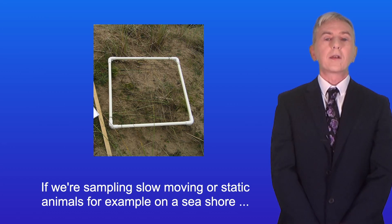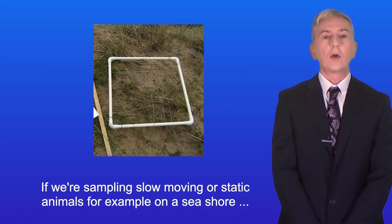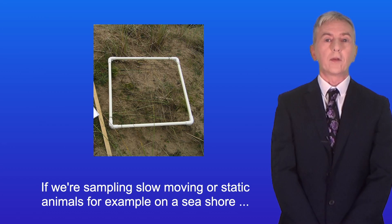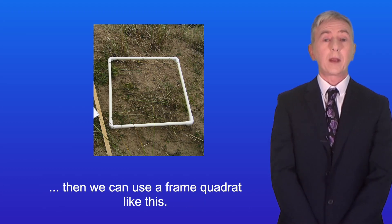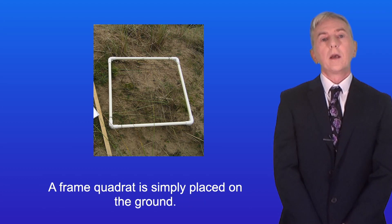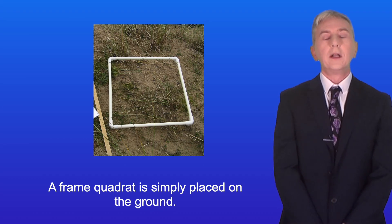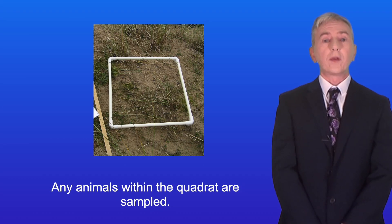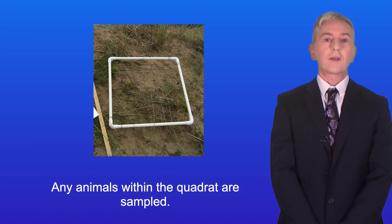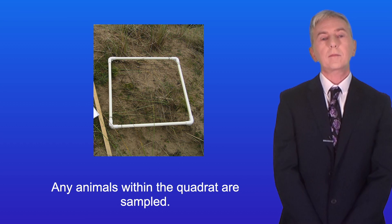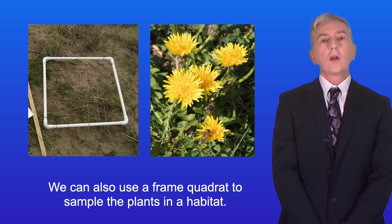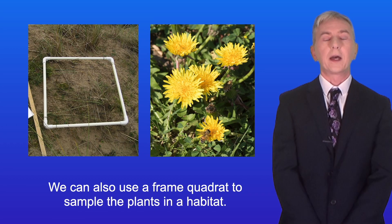Now if we're sampling slow-moving or static animals, for example on a seashore, then we can use a frame quadrat like this. A frame quadrat is simply placed on the ground and any animals within the quadrat are sampled. We can also use a frame quadrat to sample the plants in a habitat.